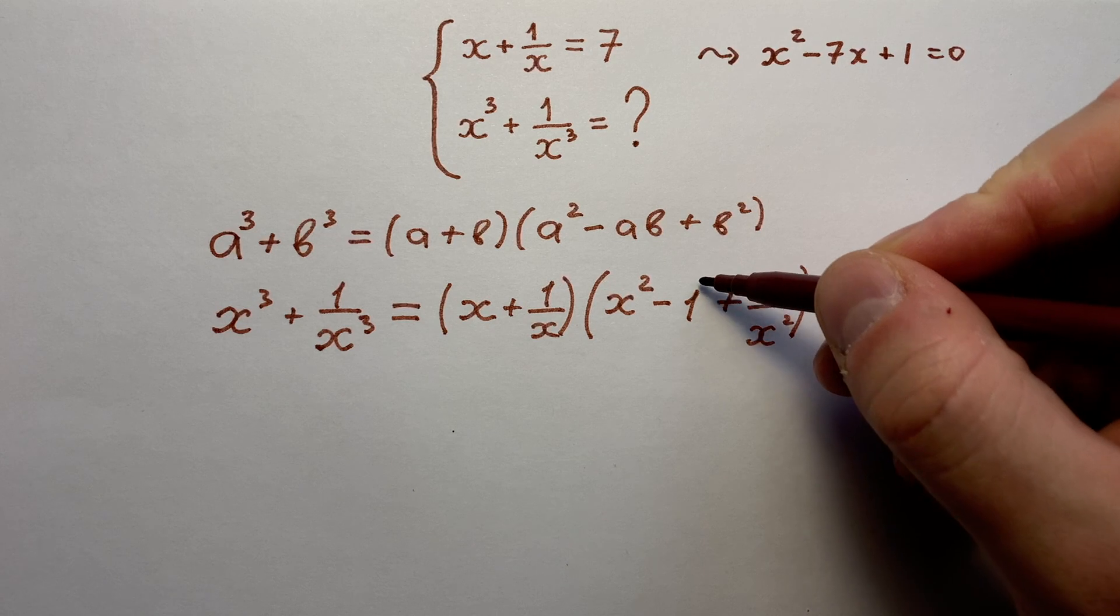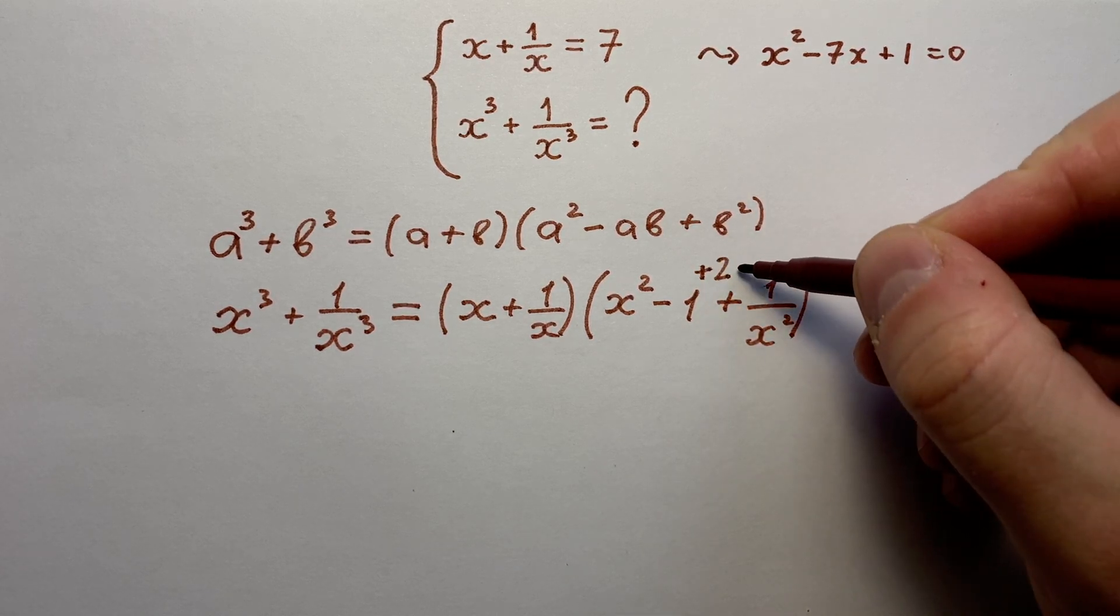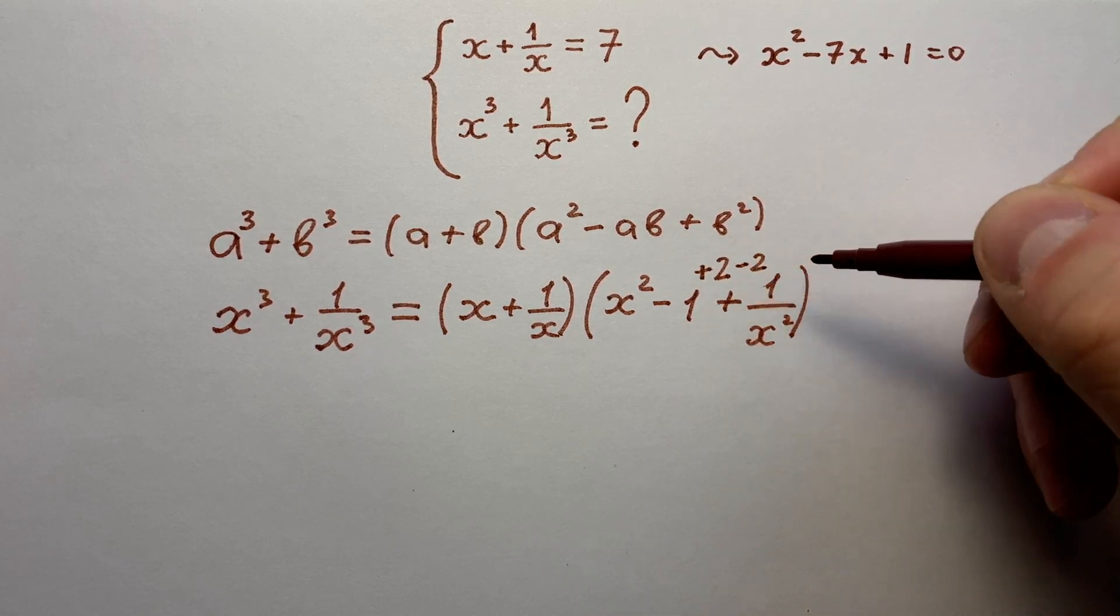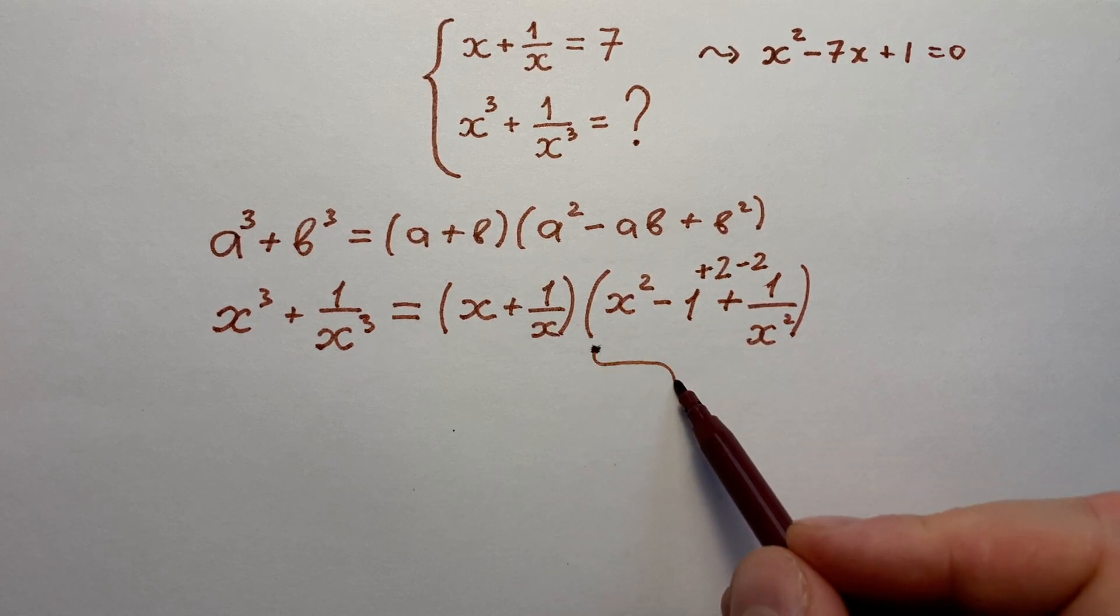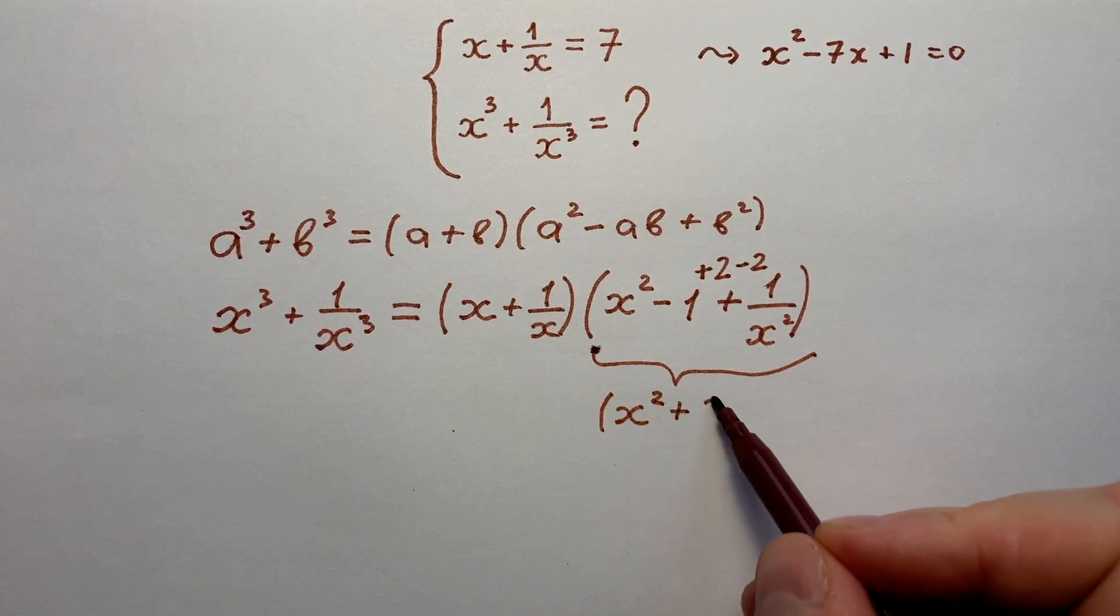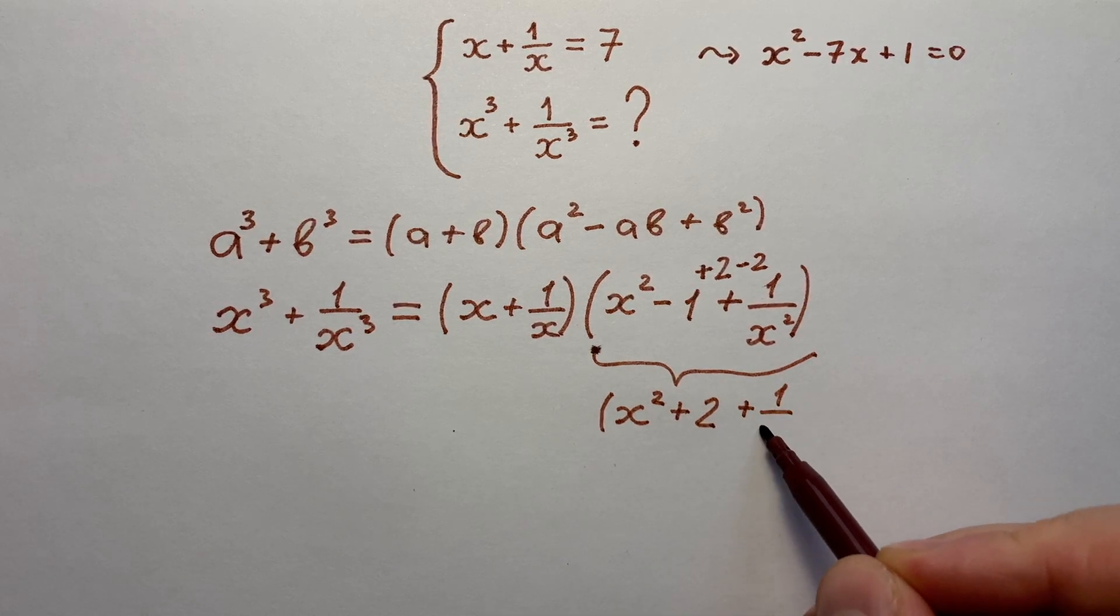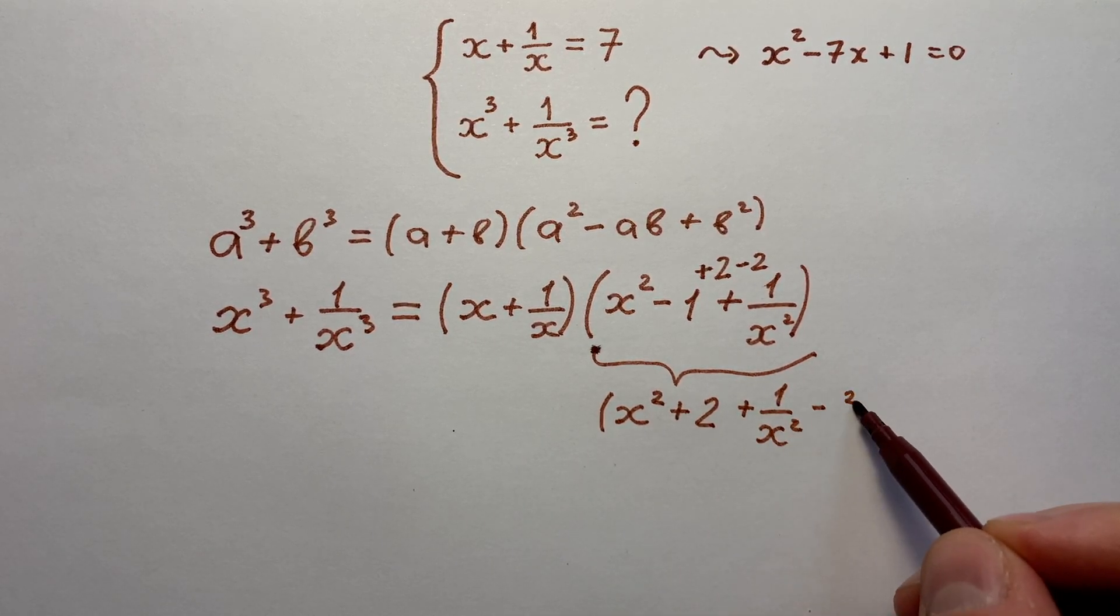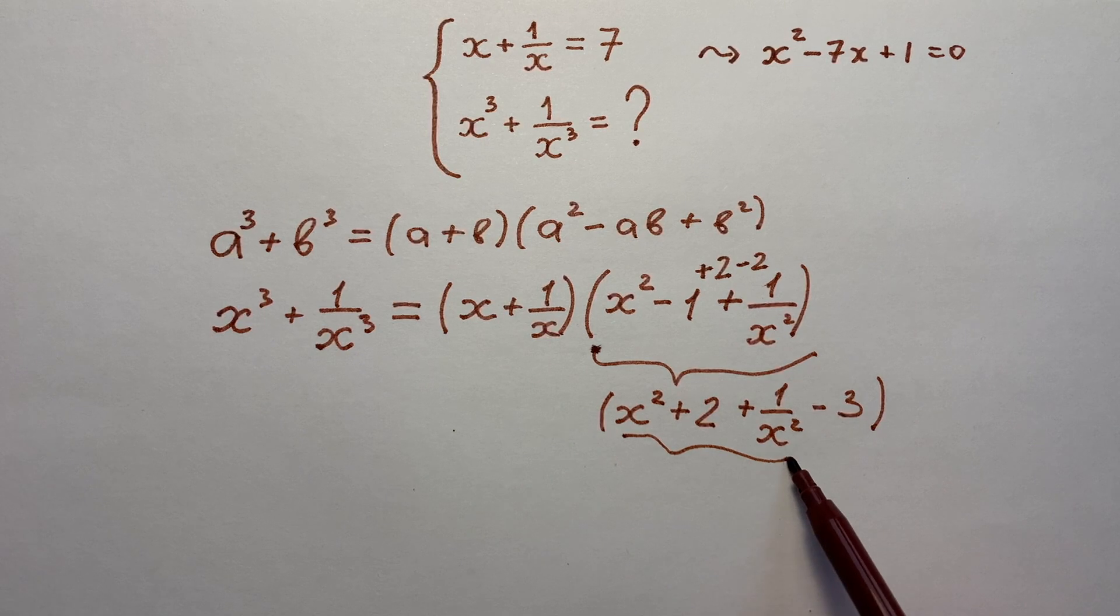After minus 1 let's plus in this bracket plus 2 and after that minus 2. With the help of that trick we can write this bracket like x² + 2 + 1/x² - 3. And here is a full square.